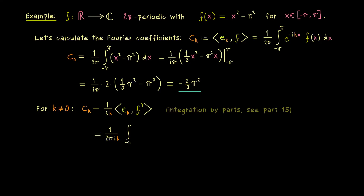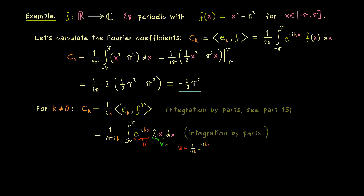Using the formula, we have the factor 1/(ik) times 1/(2π) in front of the integral from -π to π, and inside we just have the derivative of f, which is 2x. Integration by parts helps again because we can reduce this linear function to a constant. The exponential function is u' and the linear term is v, so finding the antiderivative of u is straightforward.